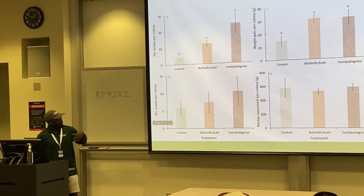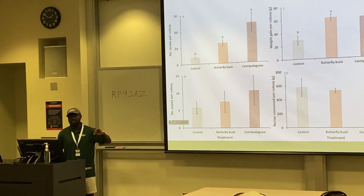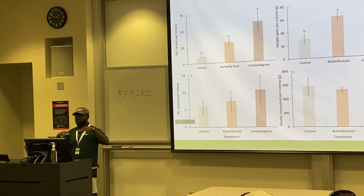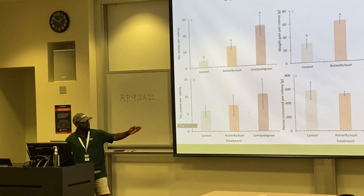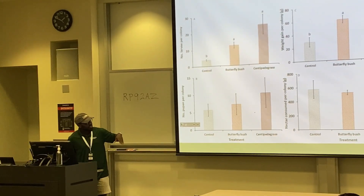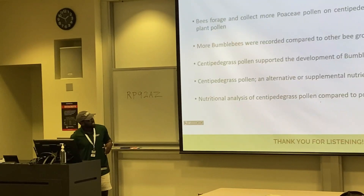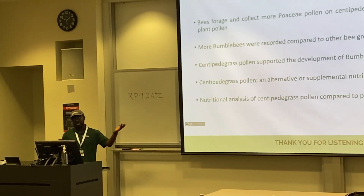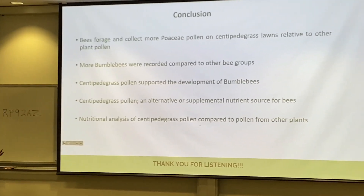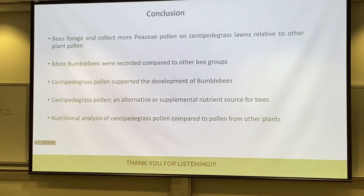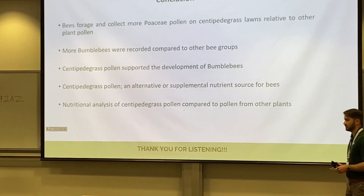We also looked at number of pupae and saw no difference comparing butterfly bush pollen, centipede grass pollen, and the control — which was just sugar water. When bees had access to pollen from butterfly bush or centipede grass, there was no significant difference in outcomes, including sugar consumption. This basically shows that centipede grass is a resource that could be useful to bees, and bongo bees appear to be utilizing it extensively. Further research should be done to look at the nutritional analysis of centipede grass pollen.